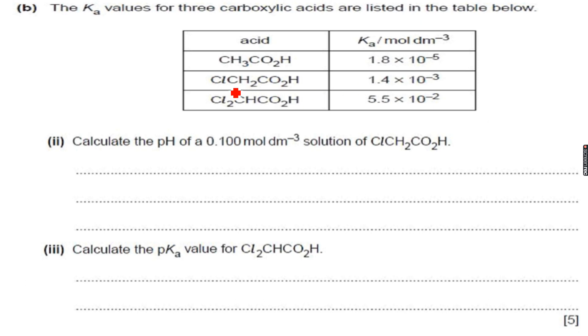We have chloroethanoic acid, two chloroethanoic acid, which has a Ka of 1.4 into 10 to the power of minus 3 and we have 2,2 dichloroethanoic acid which has a Ka of 5.5 into 10 to the power of minus 2 mol per dm cube.